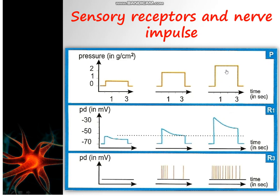In the third case, we apply a pressure of around 3 grams per centimeter square. The receptor potential increases more, and the receptor becomes able to generate more action potentials — 13 APs — due to 3 grams per centimeter square of pressure.